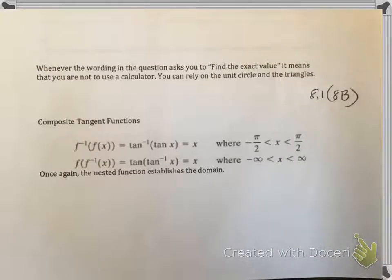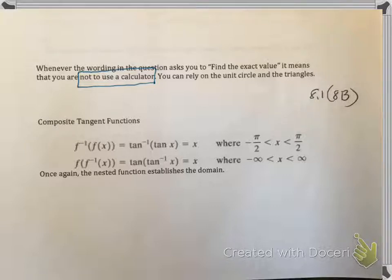Whenever the question asks you to find the exact value, you do not use a calculator. You have to rely upon your unit circle and your 30-60-90 and 45-45-90 triangles. Now let's look at composite functions. We've seen sine and cosine, and the first type is a problem child: it has regular tangent as the inner function and inverse tangent as the outer function.